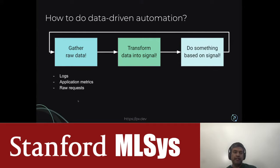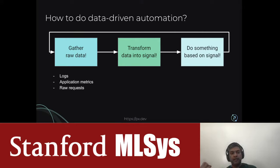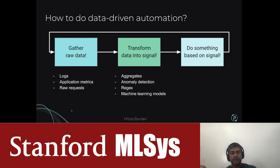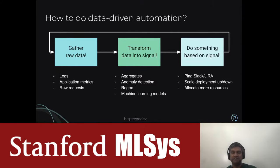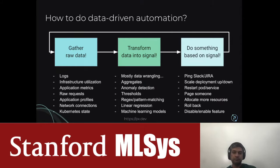In the application space, the raw data could be logs, application metrics like requests per second, time spent in functions, or request bodies sent over the network. The signals could be aggregates, anomaly detection, or machine learning models. And the actions could be pinging Slack, creating Jira tickets, or scaling your deployments — there are many more possibilities beyond just those.